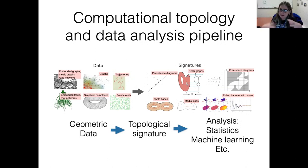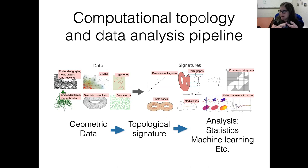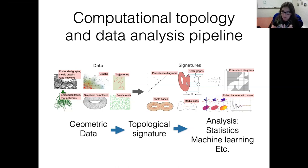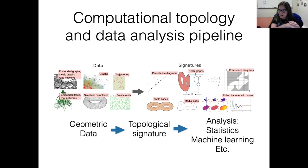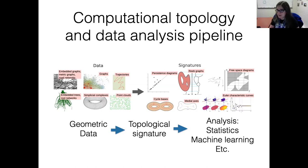This talk fits loosely under a common pipeline in computational topology or topological data analysis: we somehow get geometric data and we want to analyze it. The data itself is messy, noisy, and dense, so we try to simplify it to some kind of signature. Persistence diagrams are pretty famous, but you can talk about medial axes, read graphs, or characteristics for Shea matchings — all kinds of things meant to take a messy Euclidean dataset and make a signature. Then depending on the dataset, the goal is some kind of analysis: shape comparisons, statistics, machine learning.